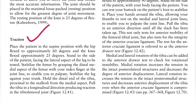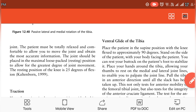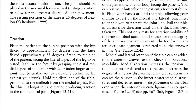First, we give traction. We place the patient in the supine position with the hip flexed to approximately 60 degrees and the knee flexed to approximately 25 degrees. We stand to the side of the patient, face the lateral aspect of the leg to be tested, and stabilize the femur with the index finger. We place the supplies on the distal length of the tibia, hold proximal to the midline from the medial aspect, and pull the tibia in the longitudinal axis — tibio-fibular traction.